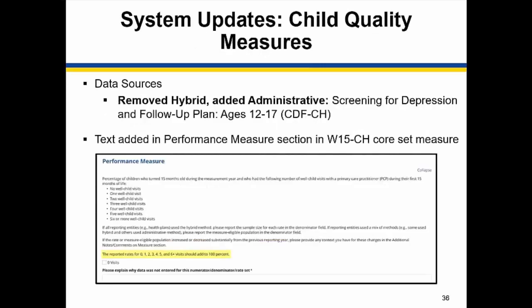For child quality measures reports in 2019, there were changes in data sources in the core set measure on the slide. Text was also added in the Performance Measures section in the W15CH core set measure. These are instructions to improve data quality and not technical specification changes.